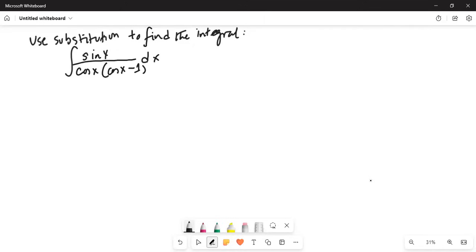Use substitution to find the integral, integration of sin x divided by cosine x times cosine x minus 1 dx. So the first substitution we will make. Let's change the color of the ink.